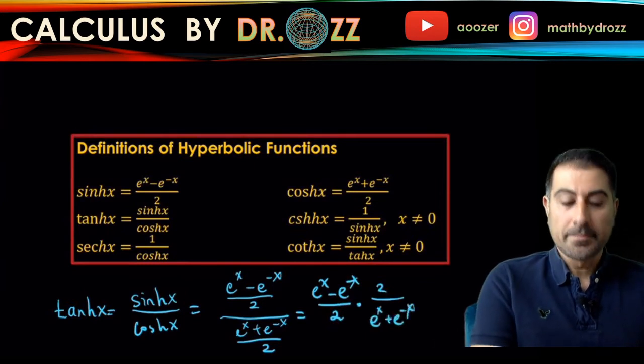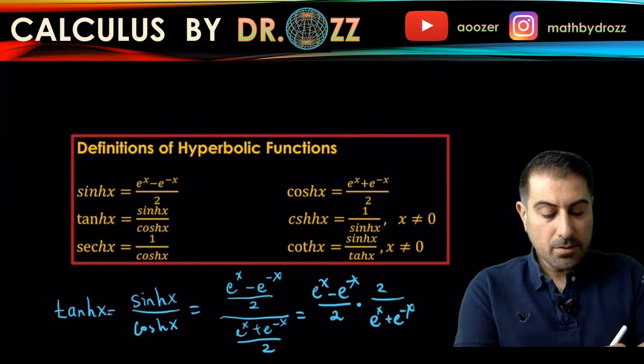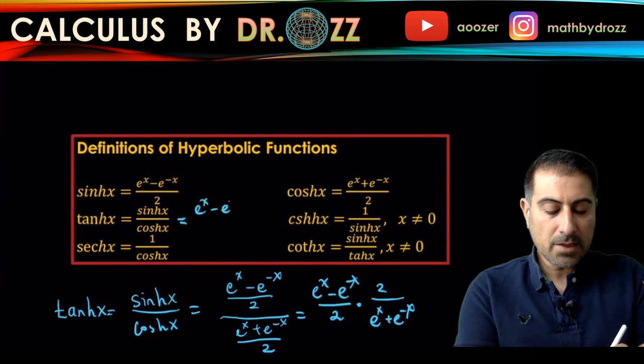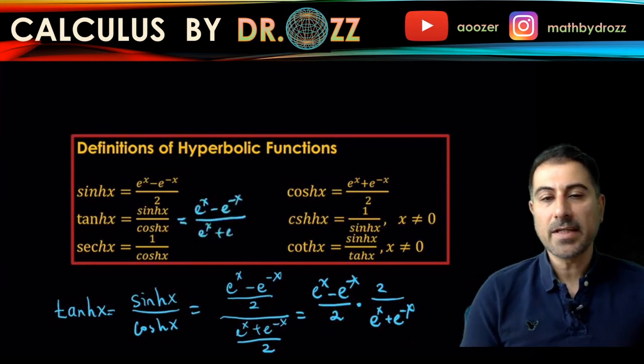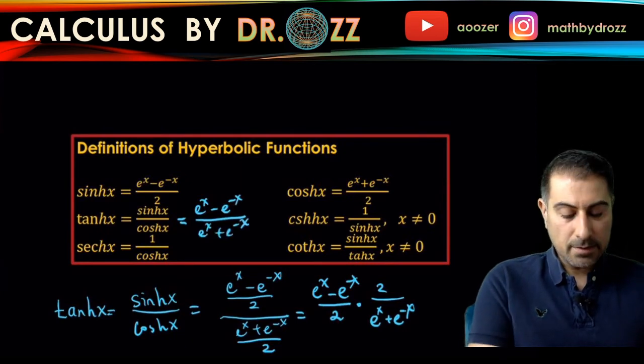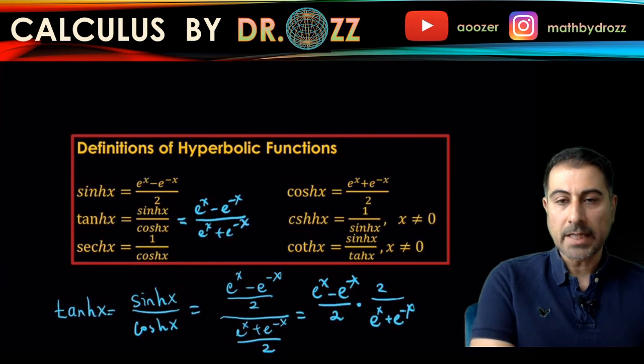That takes you to, let me just write down here, e to the x minus e to the minus x over e to the x plus e to the minus x. So this representation is way nicer than the original representation of sinh x divided by cosh x.